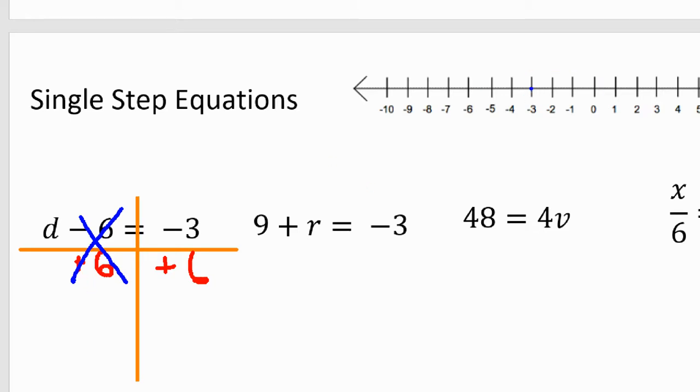Negative three, go up to my number line, start right here, plus six means I'm going to go six this way. So one, two, three, four, five, six. So as you can see, my answer is going to be d equals positive three. That's it.